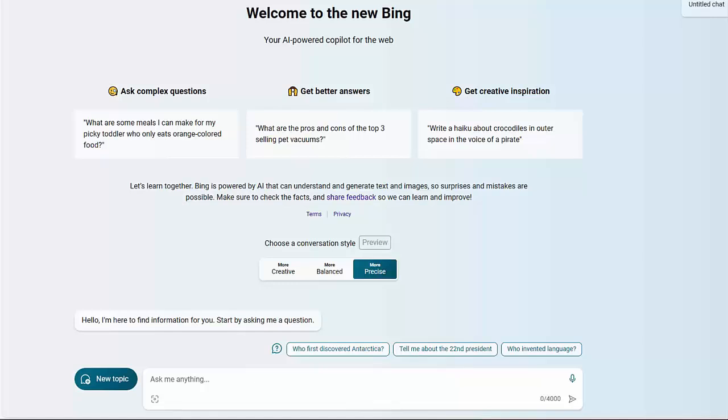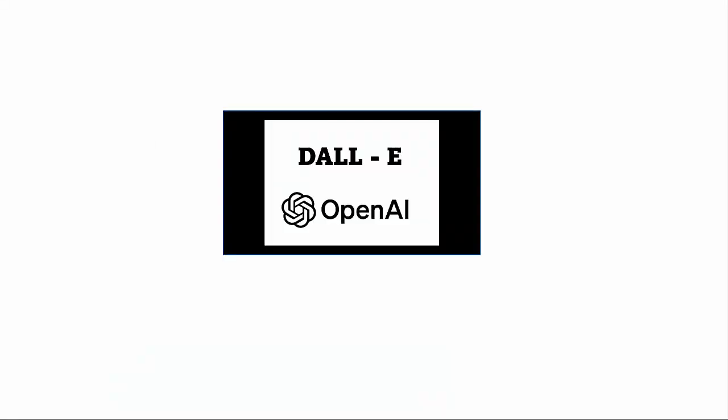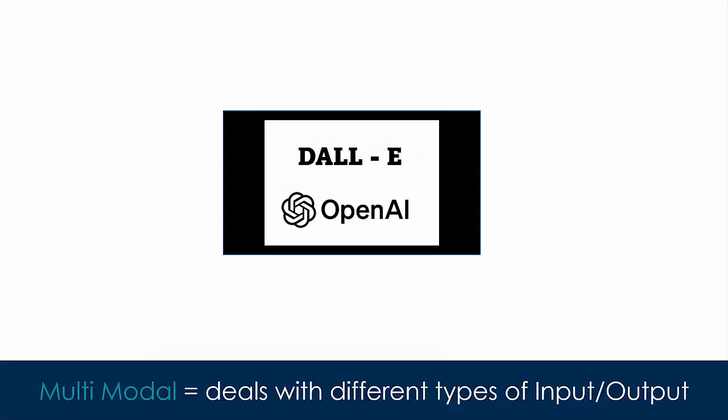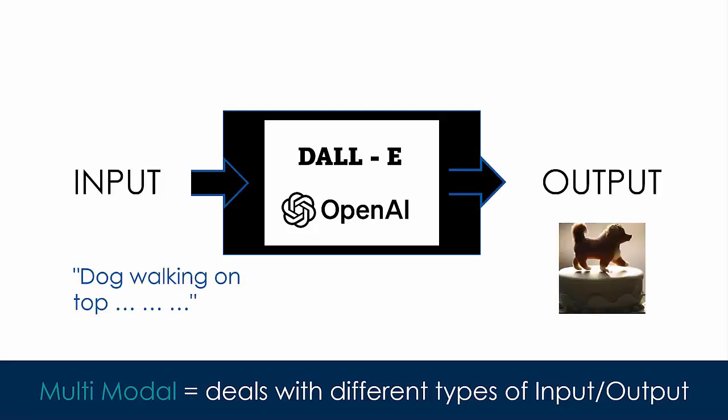More on this in a later lesson. Let me introduce you to a new term, multimodal models. Multimodal models are trained on different types of training data to generate an output that is of different type compared to the input type. In case of DALI, it takes text and generates images. DALI is a multimodal implementation of OpenAI GPT-3 model.